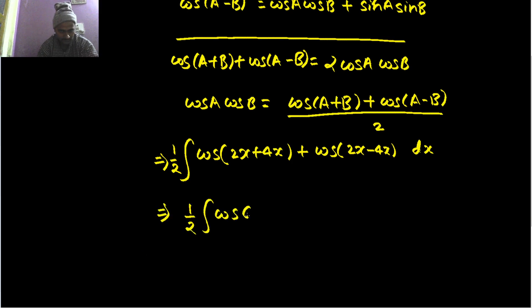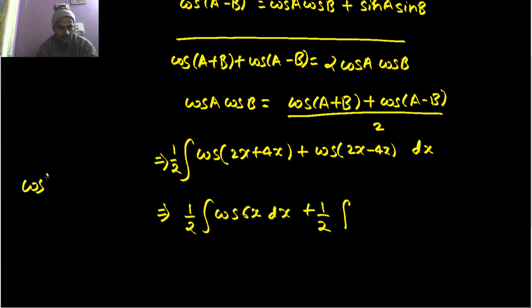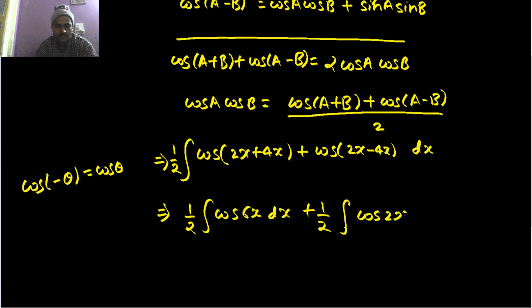...which gives us cos 6x plus cos 2x. So this will be the integral of cos 6x plus cos 2x, multiplied by one half.